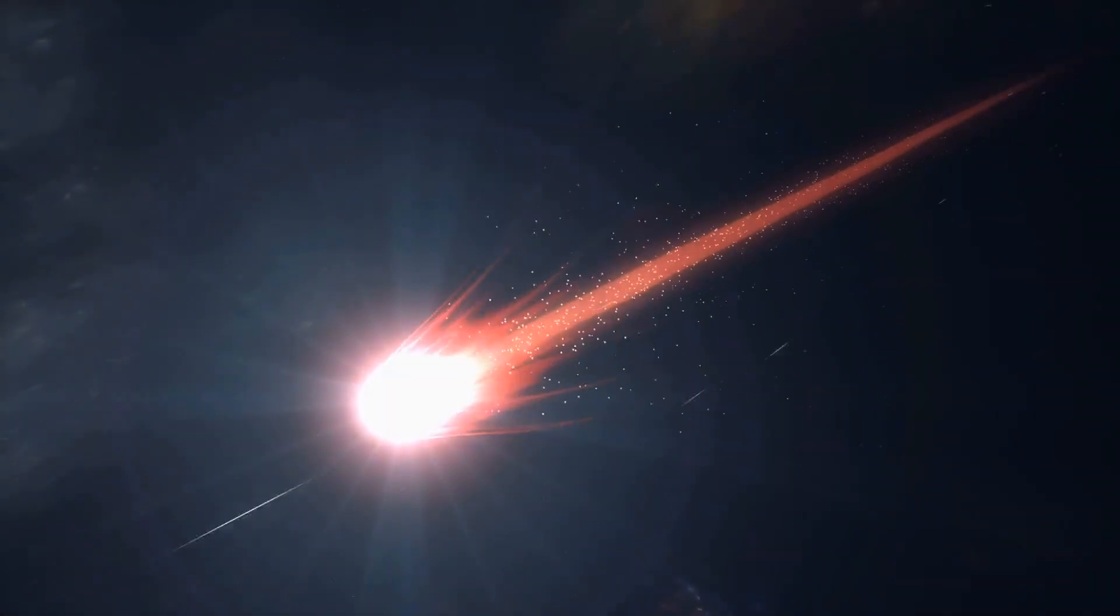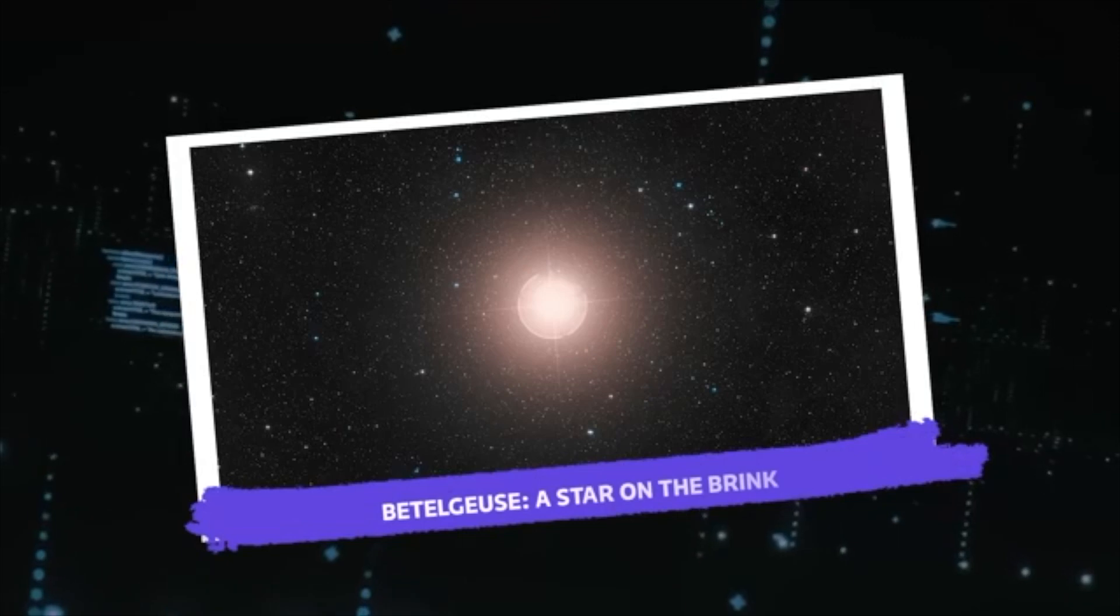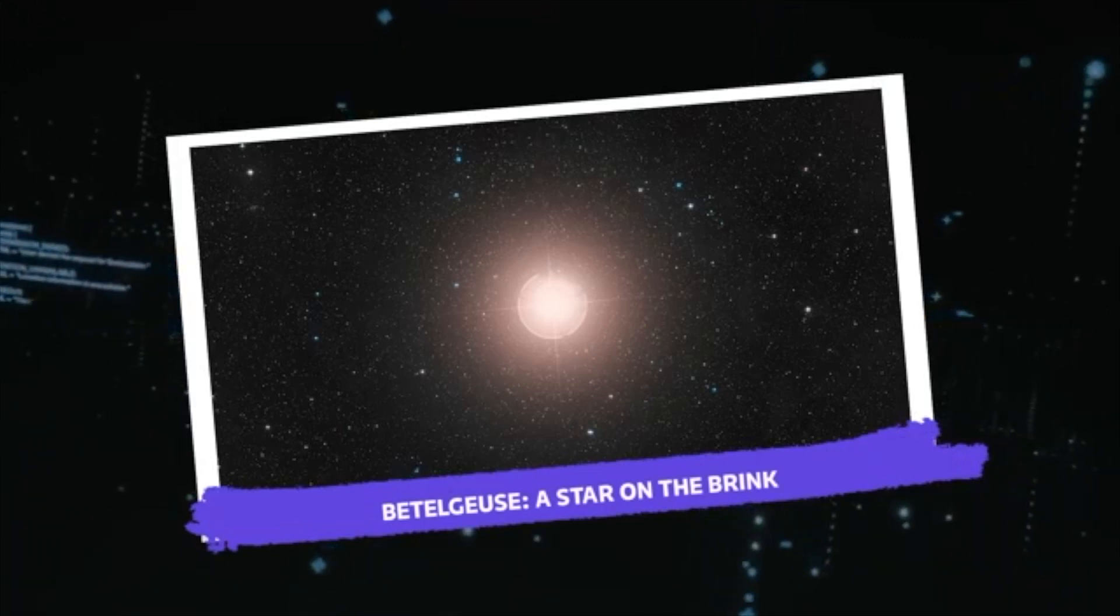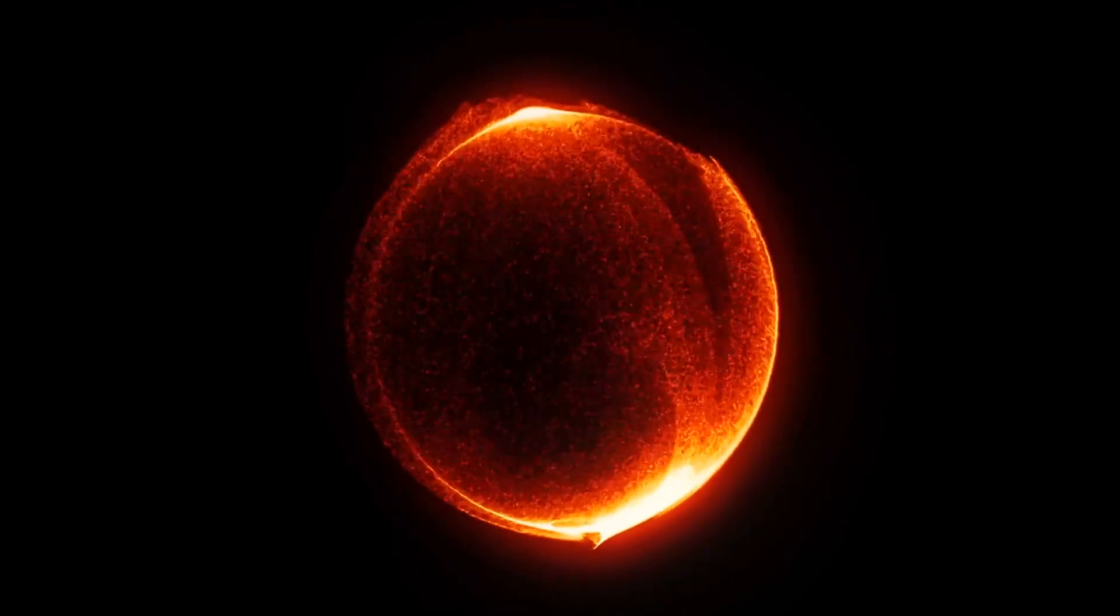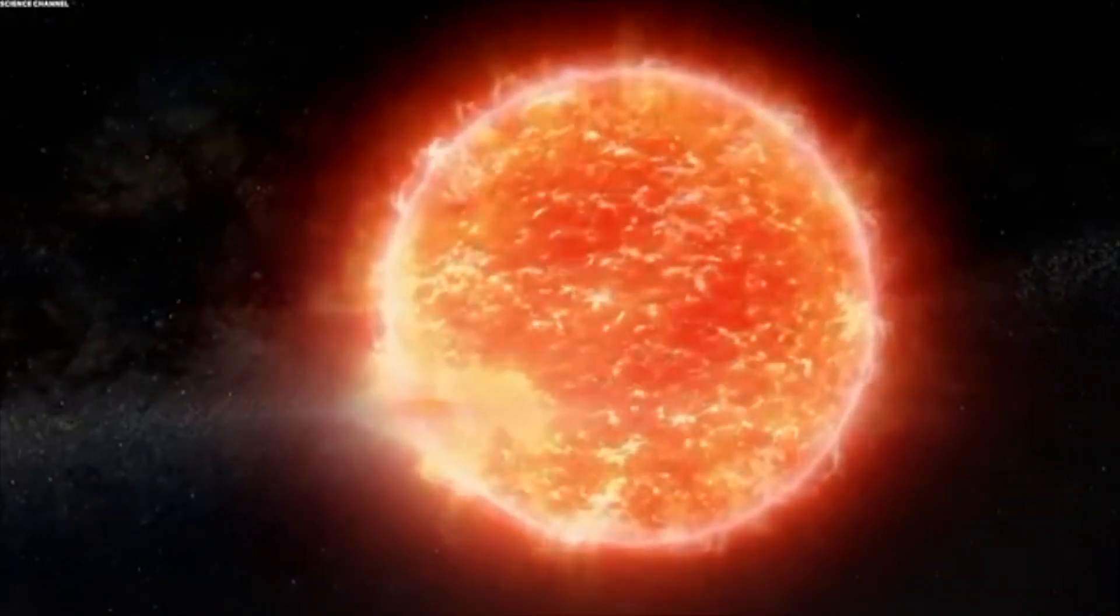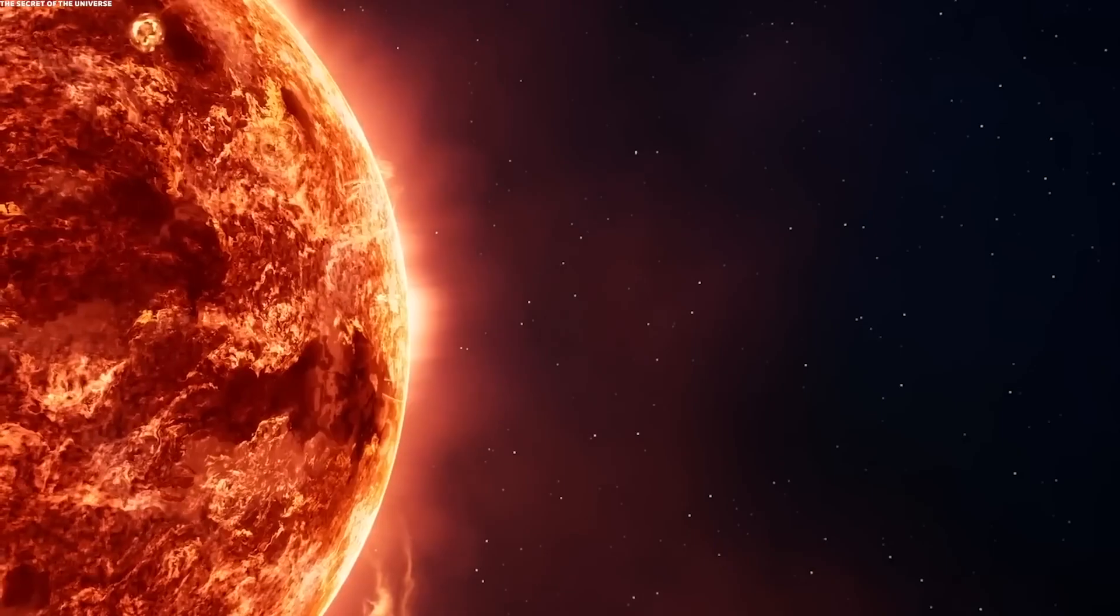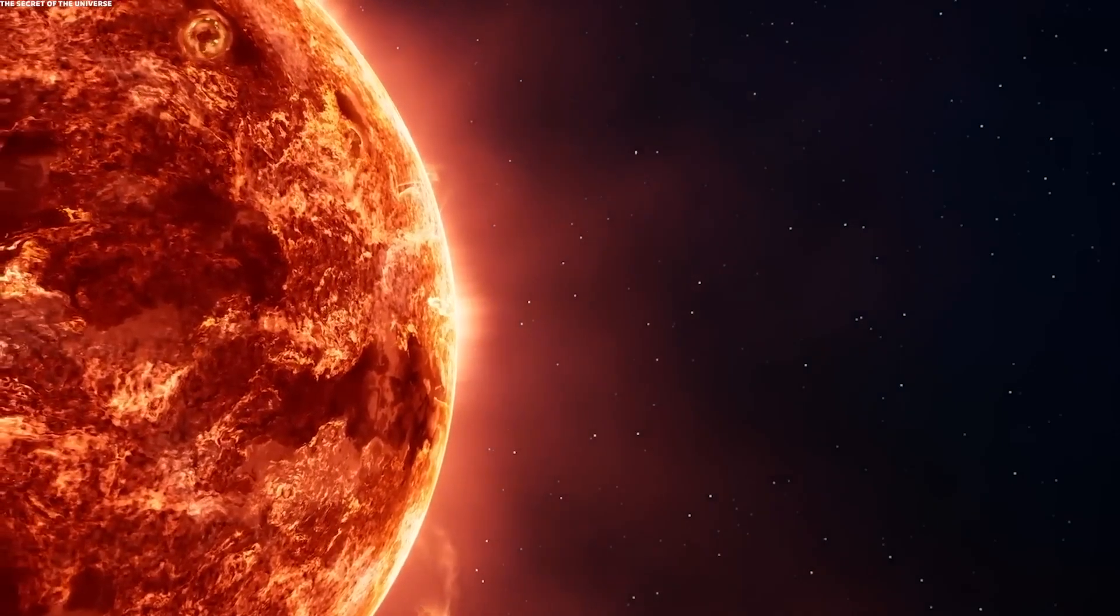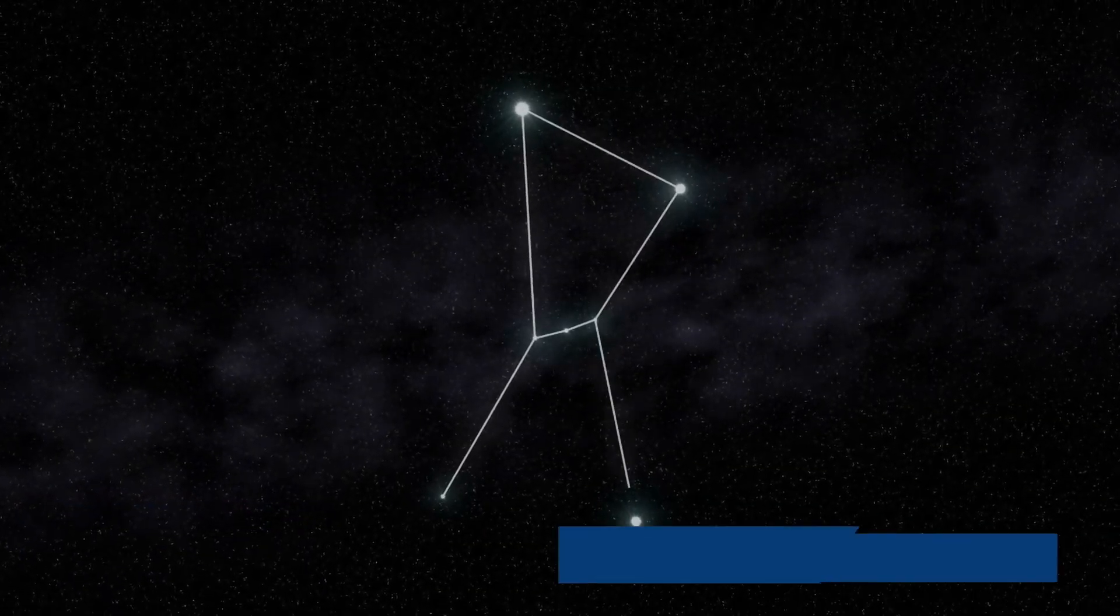In the deep, silent space, Betelgeuse sits majestically in the Orion constellation as a celestial behemoth. This red supergiant star possesses unmatched grandeur and magnitude that dwarfs even our own sun. Among the twinkling canvas of the night sky, Betelgeuse is a distinctive presence, conspicuous with its unique reddish hue, often identified as the Hand of Orion in ancient Arabic nomenclature.